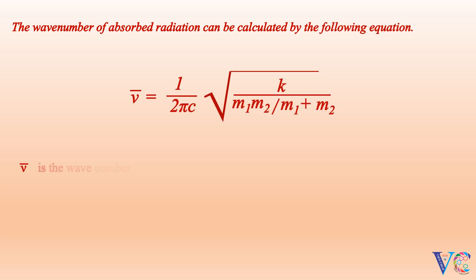The wavenumber of absorbed radiation can be calculated by the following equation. ν̄ is the wavenumber of the absorbed radiation. c is the velocity of light.